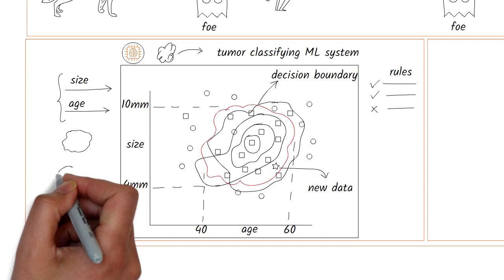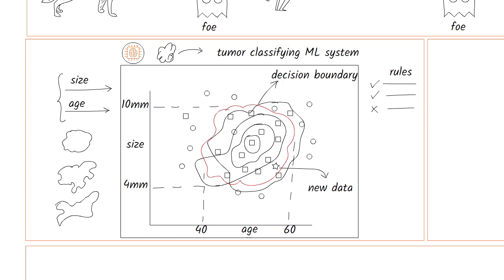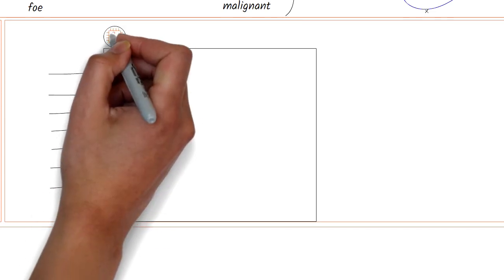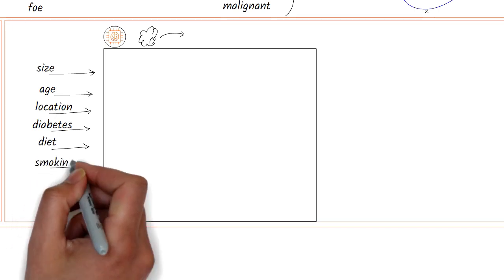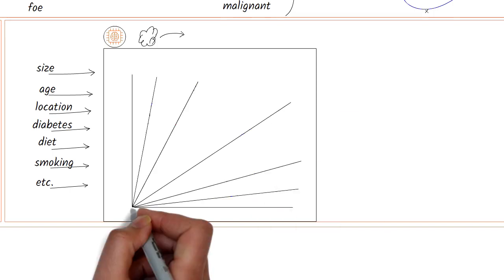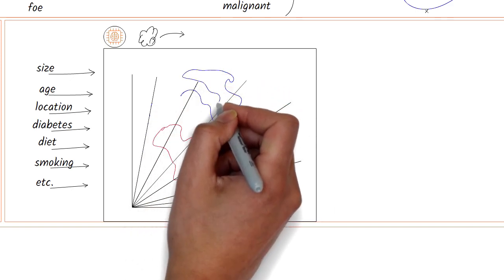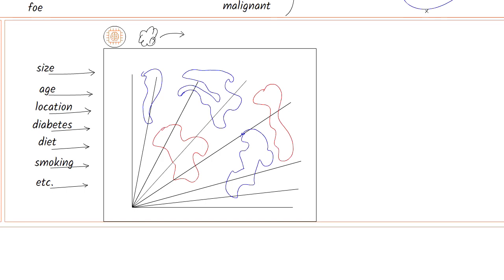In 2D space, the classification is relatively easy to interpret, even though these decision boundaries can take on more complex shapes. But what if we start adding more features — like the location in the body, the patient's presence or absence of other medical conditions like diabetes, heart problems, and hundreds of other possibilities such as diet, smoking, and drinking habits? These features could even run into the thousands, so the decision boundary becomes difficult to interpret in, say, thousand-dimensional space.